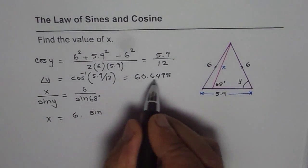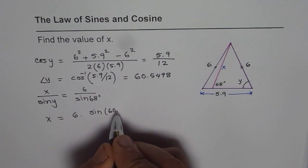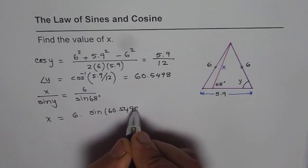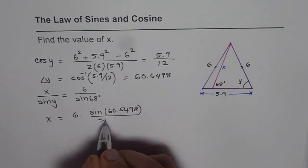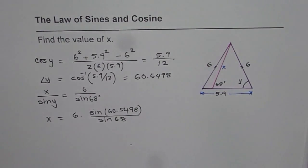From here we can find x equals 6 times sine of 60.5498 divided by sine of 68. So we get sine of 60.5498 times 6 divided by sine of 68.